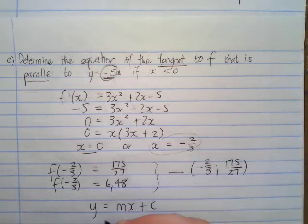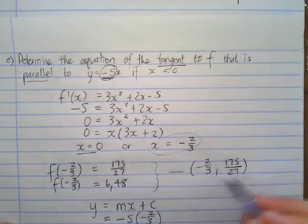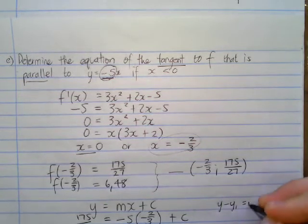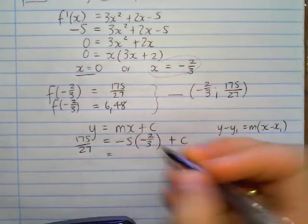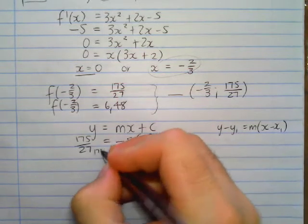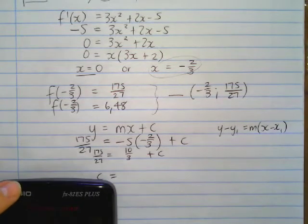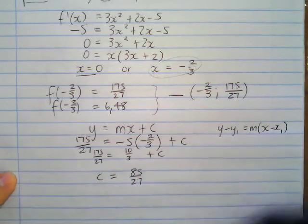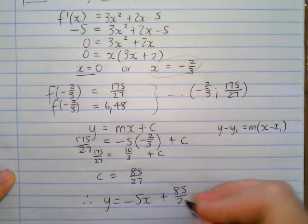So lastly, we need to say our gradient that we have here is -5, our x value where this is happening is -2/3, we're subbing this in, and 175/27, and then our c value is our last piece of the unknown. Then lastly, let's times out this bracket. You've got -5 times -2/3, that's going to give you positive 10/3, and that's 175/27 plus c. So then c ends up being 175/27 minus 10/3, making c 85/27. Therefore, what is the equation of our tangent? y is equal to -5x plus 85/27.